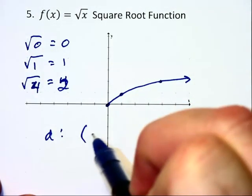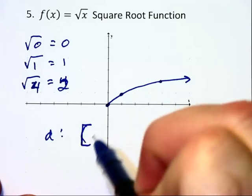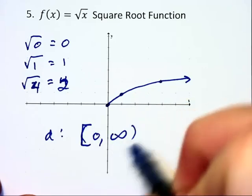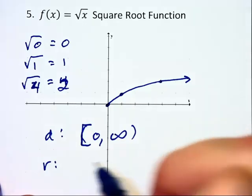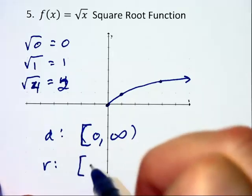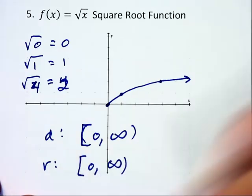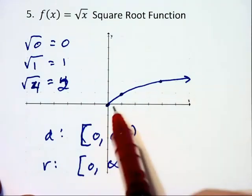So our domain is going to go from 0 which we include up to infinity. And the range will also be from 0 to infinity.